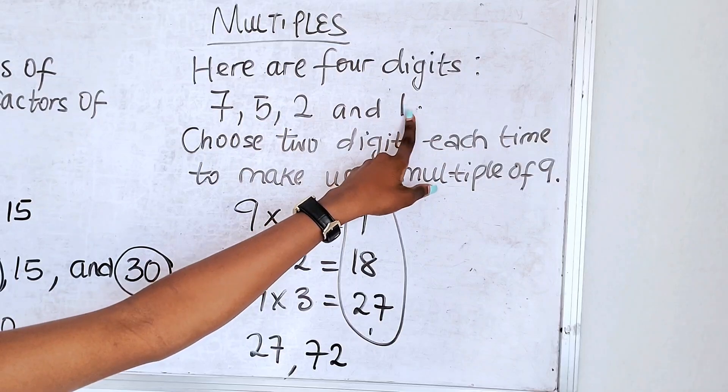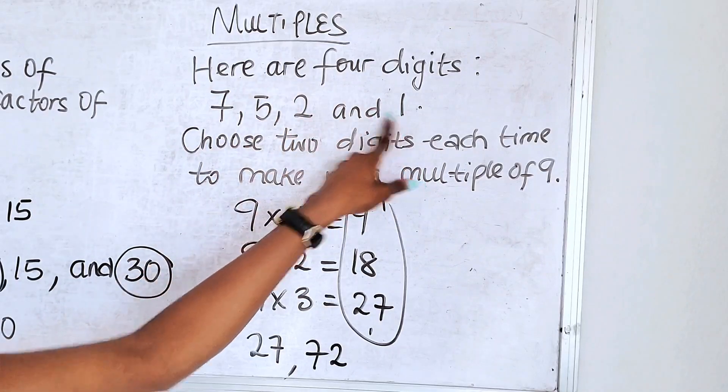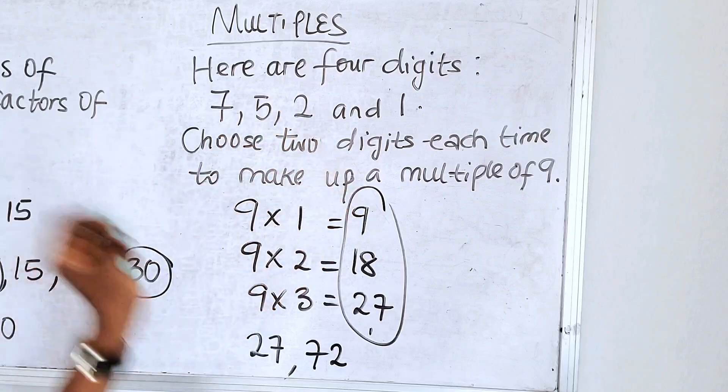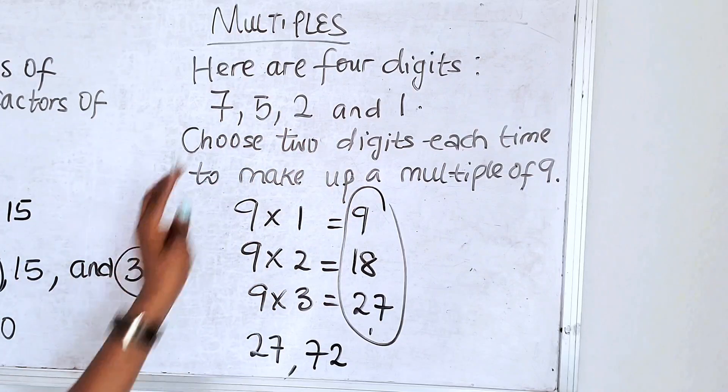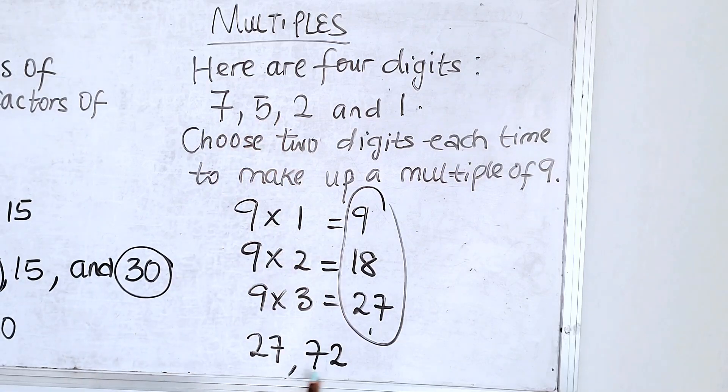Of course 51 is not a multiple of 9. 21 is not a multiple of 9. 17 is not a multiple of 9. 15 is not. 12 is not. So the only 2 that are multiples of 9 from these digits when you put them together are 27 and 72.